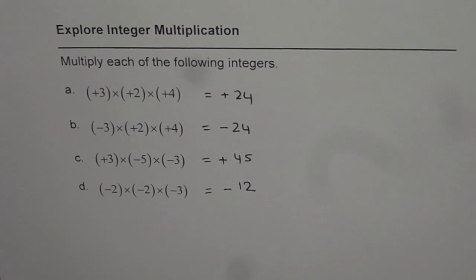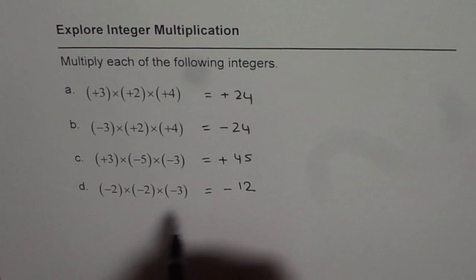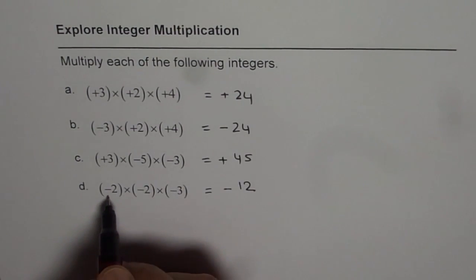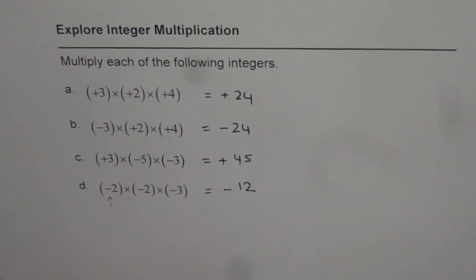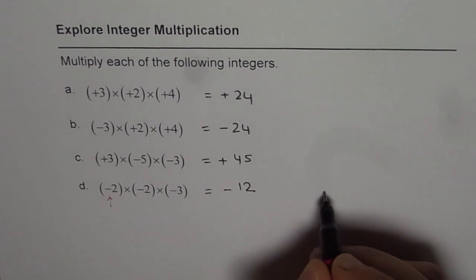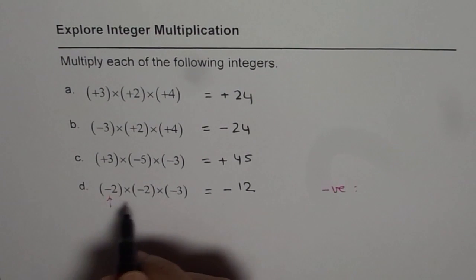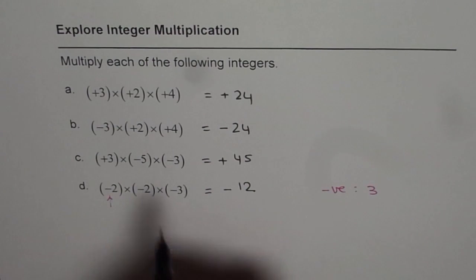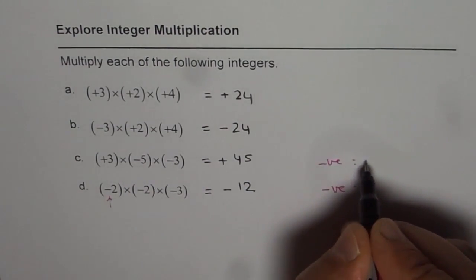Now, it is important to note that we could actually get this sign by counting negative integers. In this case, we have how many negative integers? We have three. In this case, how many negative integers? We have two.